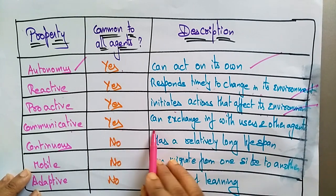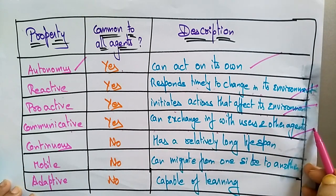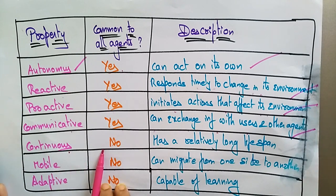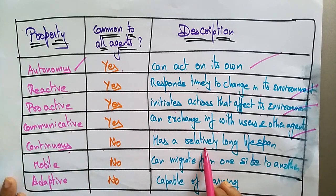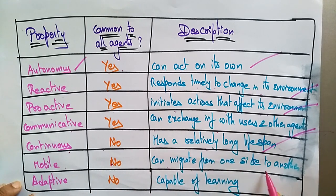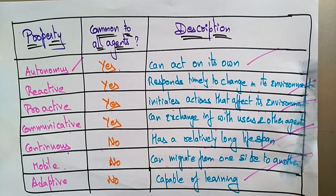The property 'continuous' — having a relatively long lifespan — is not common to all agents. 'Mobile' is not common to all agents; only the mobile agent has this property, meaning it can migrate from one site to another. 'Adaptive' — the capability of learning — is also not common to all agents.